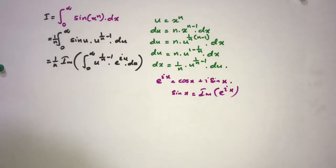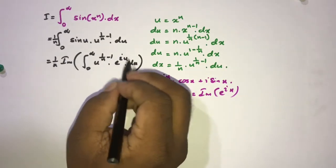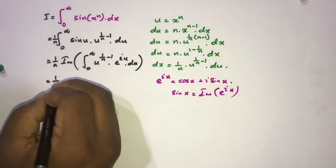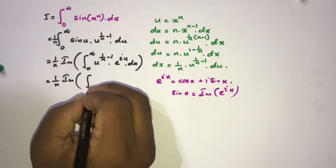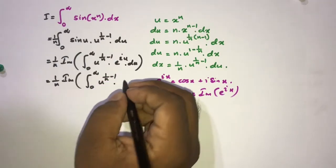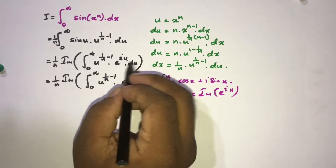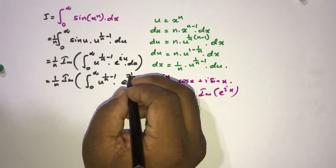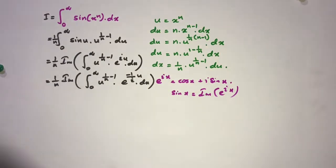In the Gamma function definition we need a minus sign in the exponent, but here we don't have one. So I will rearrange: 1 over n times the imaginary part of the integral from 0 to infinity of u to the (1 over n minus 1) times e to the (minus 1 over i) times u du.